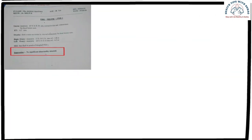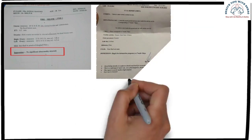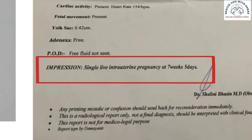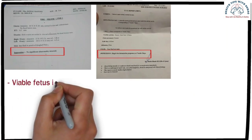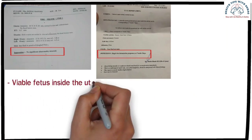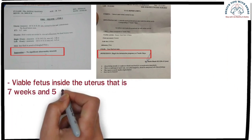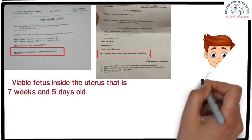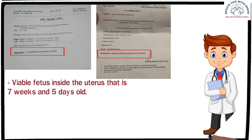Another report states that there is a single live intrauterine pregnancy at 7 weeks and 5 days, which means there is a viable fetus inside the uterus that is 7 weeks and 5 days old. By this process, you can read your TVS test report and determine whether everything is normal or abnormal.